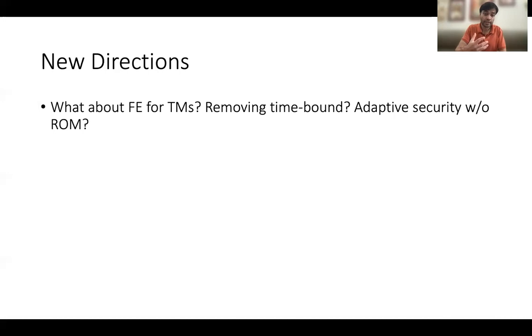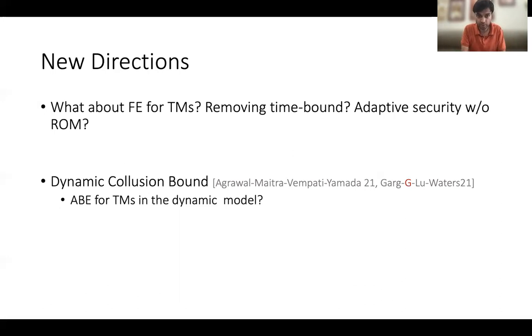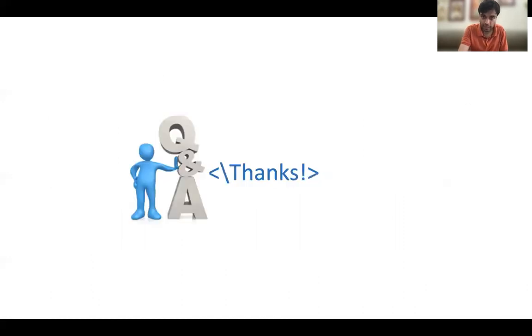Some natural future directions are: can we build functional encryption for Turing machines in the bounded collusion model? Can we remove the time bound from the encryption algorithm? What about adaptive security without the random oracle model? And recently there has been interesting work strengthening the collusion model to the dynamic collusion model — can we strengthen attribute-based encryption for Turing machines in the dynamic collusion model as well? Thank you for listening. Please send me an email if you have any more questions.